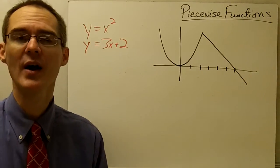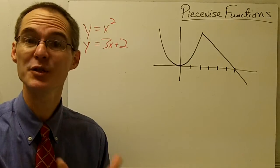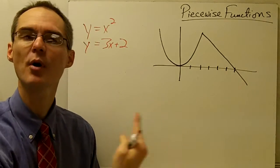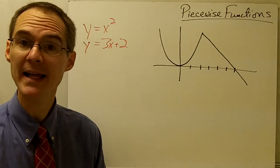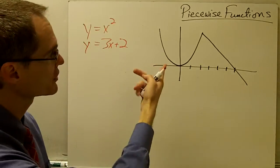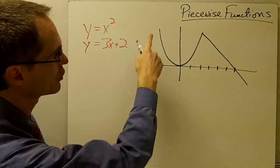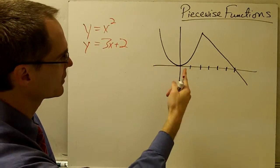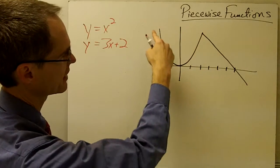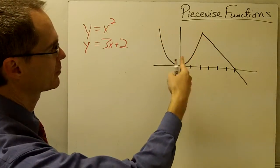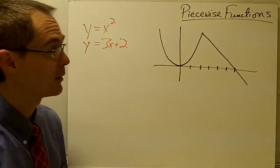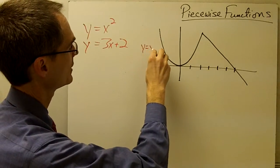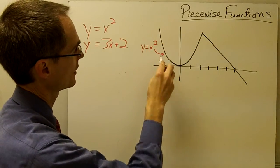Piecewise functions are actually defined by different expressions or different formulas depending on which part of the domain you're talking about. Here's a graph of an odd-looking function. For one piece of it, it looks like a parabola — which is what it is. For this piece, this is y equals x squared.